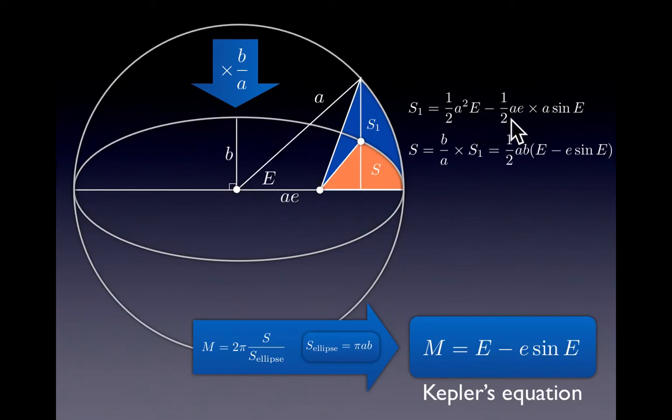This triangle has a baseline of a times the eccentricity and a height of a times sine E. So this is the expression for this triangle and this is the expression for this area.